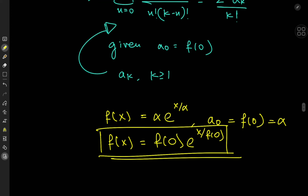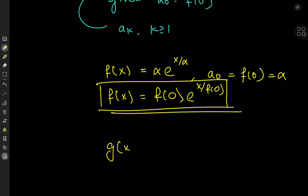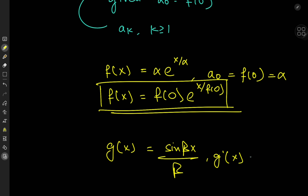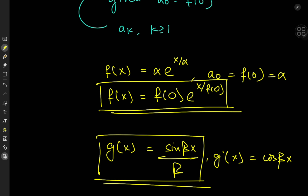We could find other solutions — for example, solutions that don't require f(0) to be non-zero. Consider the function g(x) defined as sine of (beta x) divided by beta. Differentiating gives g prime(x) equal to cosine(beta x), and multiplying out gives sine(2 beta x), which matches g(2x). In this case g(0) equals 0, but this function is indeed a solution to our differential equation, which is pretty cool. I hope you enjoyed the video — be sure to like and subscribe. Thank you, see you next time.